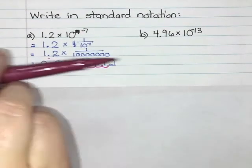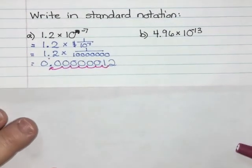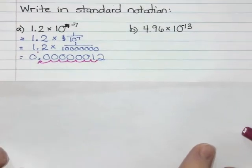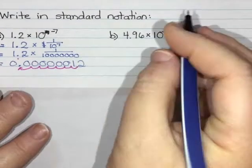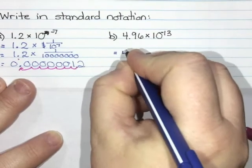So I am going to try one more example, and I think for this one I might try doing it by just moving the decimal. So I have 4.96. I'm going to write the 4 and the 9 and the 6.